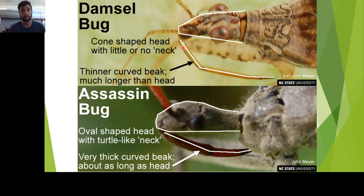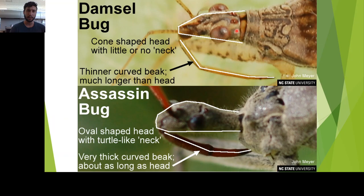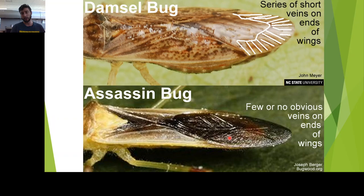I promised earlier to explain how assassin bugs differ from damsel bugs. Look at head shape: assassin bugs have a more oval, club-shaped head, while damsel bugs have a smaller, pointier, more stout head. You also get a thicker, curved beak with the reduviids, whereas in nabids it's a thinner, more slender stylet and proboscis. Also, you don't get closed cells at the end of the assassin bug wings, but you do at the end of the damsel bug wings.